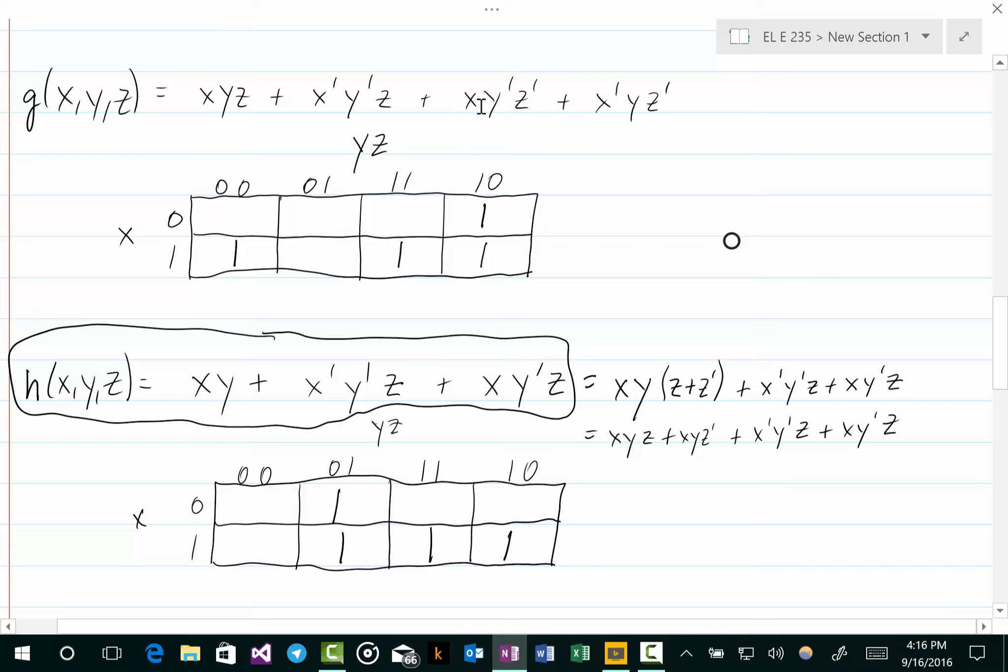If we come over here to this minterm, the only combination of the variables that will make this minterm equal to 1 is 100. And 100, if we interpret that as a binary number, it's 4. And again counting 0, 1, 2, 3, that would be 4. So the 1 in this cell represents this minterm. And again you can see, another way of looking at this is that's x equals 1, y equals 0, and z equals 0 for this cell. And that's just what we want: x equals 1, y equals 0, z equals 0 to make that equal to 1.